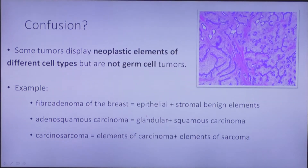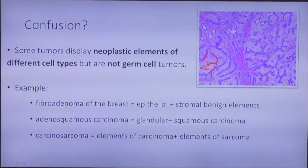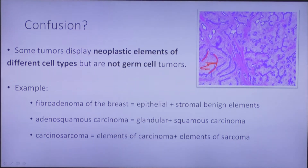Some tumors display neoplastic elements of different cell types but are not germ cell tumors. For example, fibroadenoma of the breast consists of an epithelial component and a stromal component. Adenosquamous carcinoma consists of glandular and squamous carcinoma components. The rare malignant tumor that contains intermingled carcinomatous and sarcomatous elements is known as carcinosarcoma.